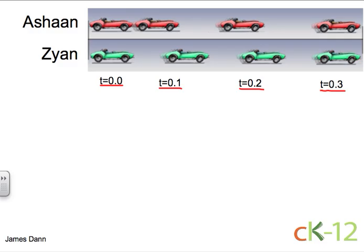One can see that the cars are behaving quite differently. Zion's car is covering the same amount of distance for every tenth of a second. This indicates that Zion is going at constant velocity because the rate is staying the same.